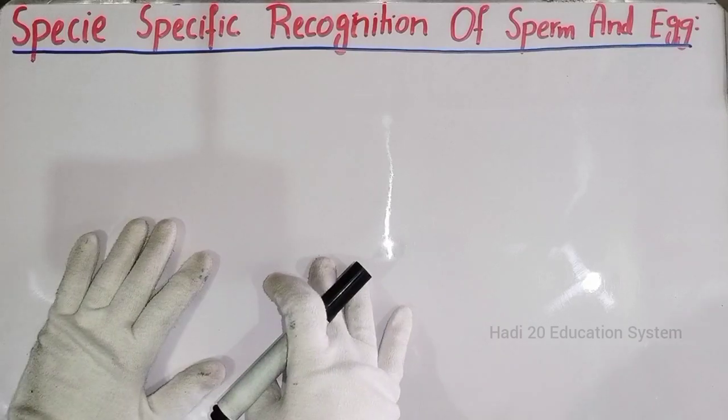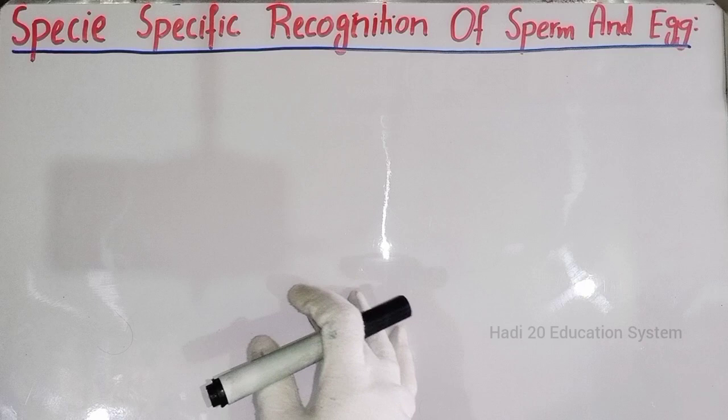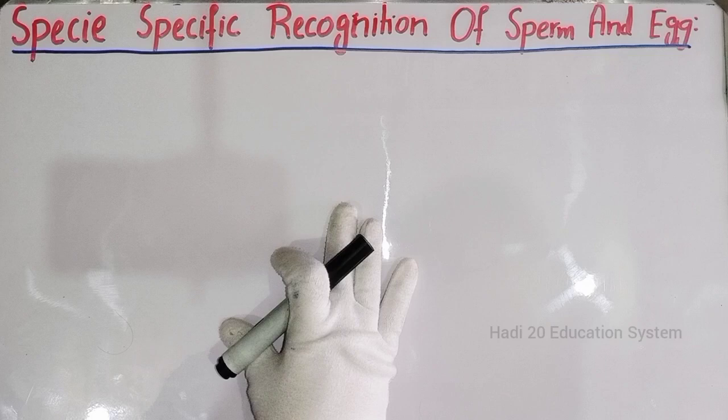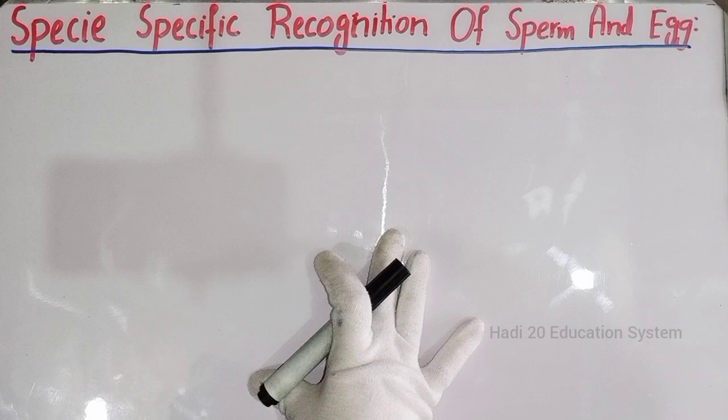Bismillah ar-Rahman ar-Rahim. Assalamu alaikum dear friends. This is lecture number two from chapter number four on fertilization in developmental biology. The title for discussion is species-specific recognition of sperm and egg, from chapter four, fertilization in developmental biology, for BS zoology and MS zoology students.